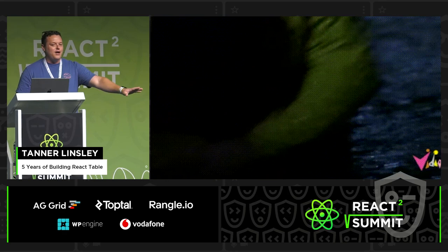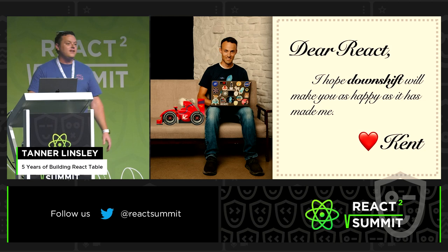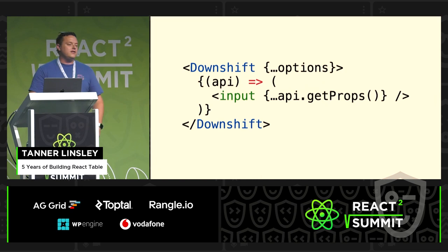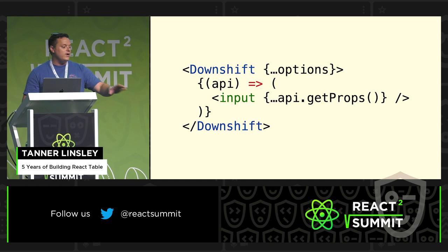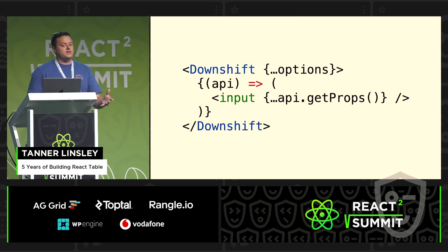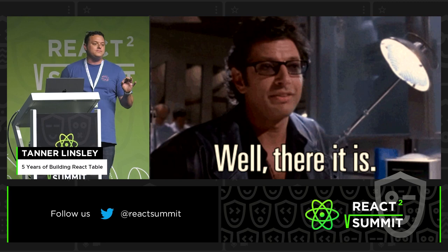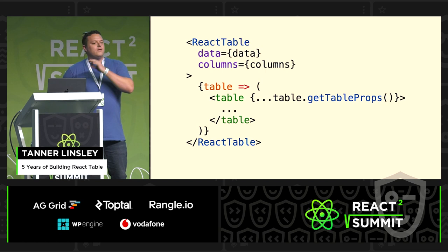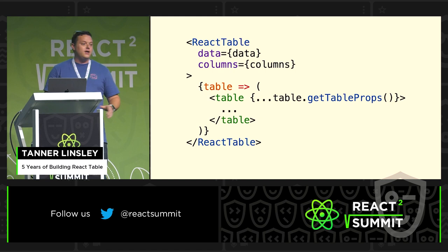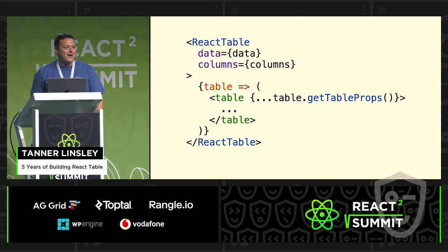Luckily I didn't die. But thankfully, while I was drowning in my misery, my friend Kent was over building a new library called Downshift. Downshift was a library for building drop-downs and auto-completes, but it was really interesting — it didn't render any markup for you. It just gave you the state, gave you the API, and you had to hook it up yourself. I saw this and I was like, this is the answer. This is how I'm going to solve this problem. Immediately I dove into the React Table source code and ripped out all that stuff. We're going to go with this API approach — invert control to the user to render everything themselves.